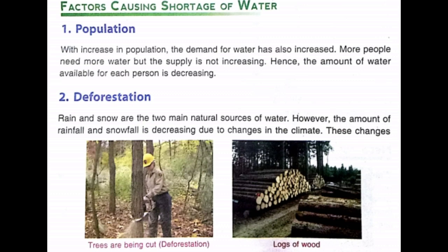As the amount of population increases, the amount of water available for each person is decreasing. Naturally, if the demand for water is increasing and the number of people is increasing compared to the available source of water, that is why population is one of the reasons leading to the shortage of water.